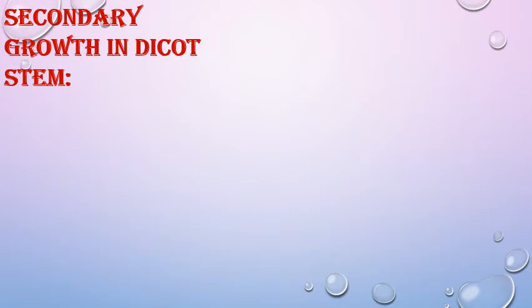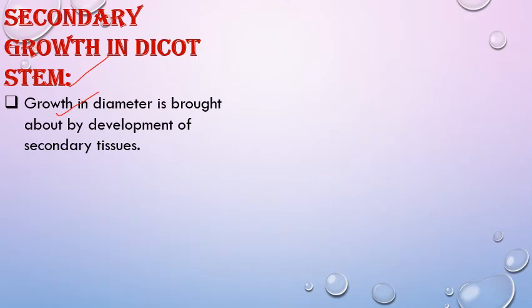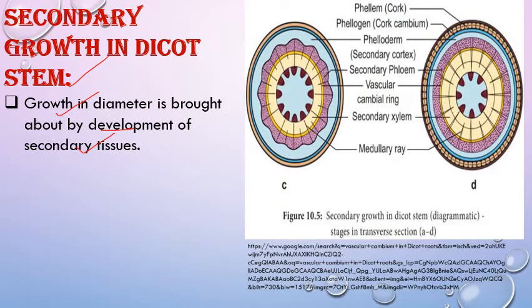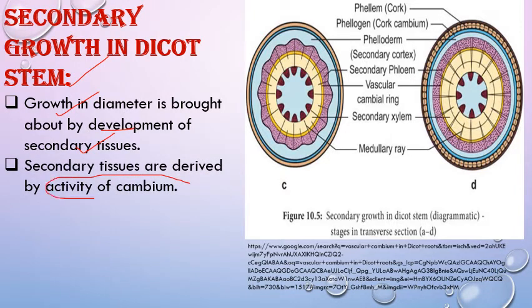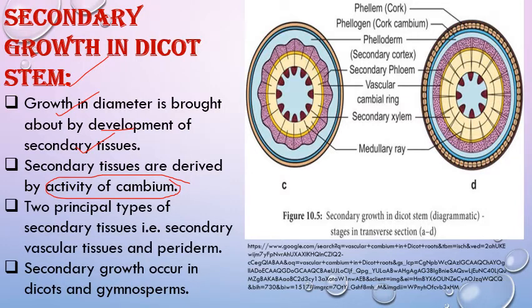Secondary growth in dicot stem follows the same pattern. Vascular cambium is responsible for formation of secondary vascular tissue — secondary xylem and secondary phloem. Growth in diameter is brought about by development of secondary tissue. Secondary tissues are divided into two types: secondary vascular tissue (secondary xylem and secondary phloem) and periderm, which is formed by the activity of cork cambium.